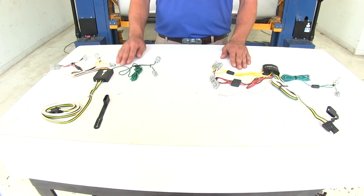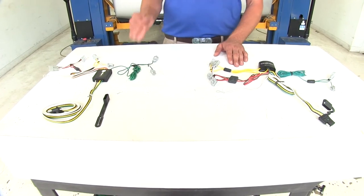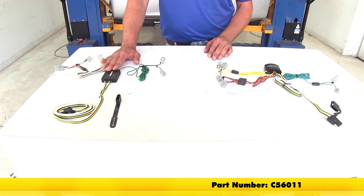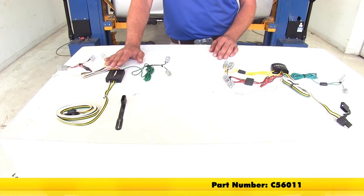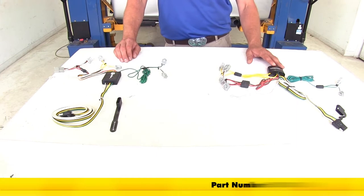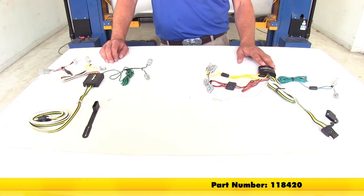If you have one of the standard models, these custom fit vehicle wiring harnesses are going to work great. For the sedan, we have CURT part number C56011 and from Tekonsha 118420.